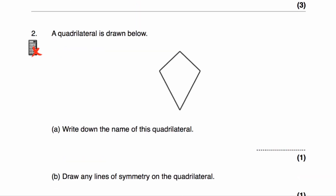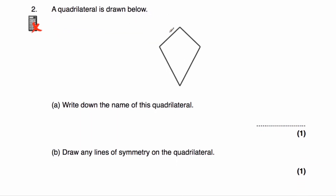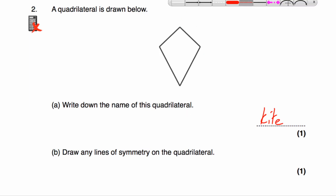Question number two. A quadrilateral is drawn below — it's a kite. Part A: write down the name of the quadrilateral, so that's a kite. Part B asks us to draw any lines of symmetry on the quadrilateral. A kite has one line of symmetry; in this case it's a vertical line of symmetry. So there's our line of symmetry.